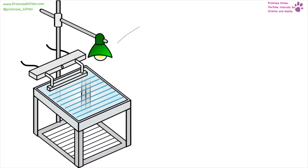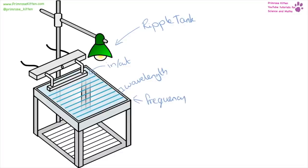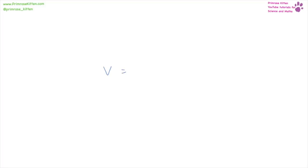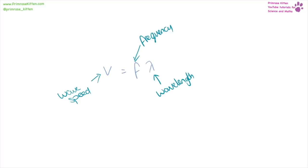To measure the speed of a wave, we can use a ripple tank. The vibrating bar goes in and out of the water creating waves. From this we can measure wavelength, and also the number of waves passing a certain point per second to get frequency. Then we use our equation: v equals f times lambda. Wave speed equals frequency times wavelength. Units of speed are metres per second, frequency in hertz (capital H, lowercase z), and wavelength in metres.